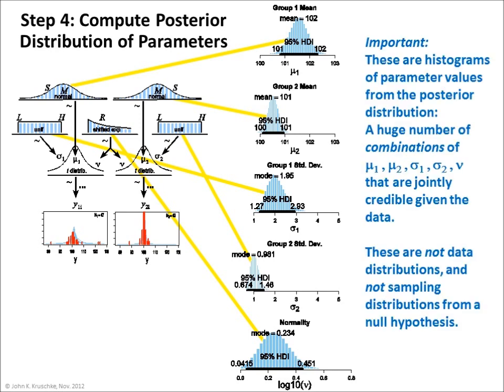It's important to understand that these are histograms of parameter values from the posterior distribution — a huge number of combinations of mu1, mu2, sigma1, sigma2, and nu that are jointly credible given the data. These are not data distributions, and these are not sampling distributions from a null hypothesis.